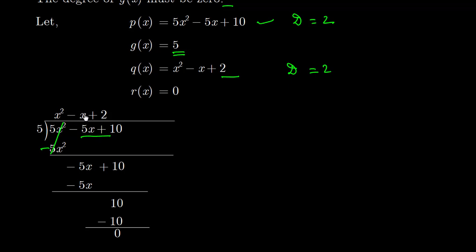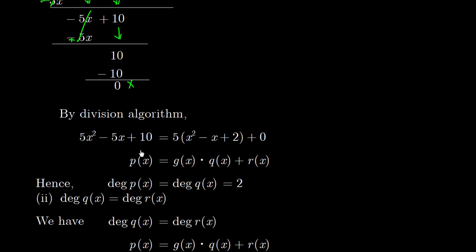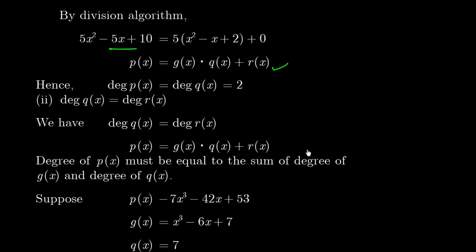To get -5x, we multiply -x by 5, giving -5x, which also cancels after sign change. Then 2 × 5 = 10, so remainder is 0. Both degrees are equal. The key point is: if degree of P(x) must equal degree of Q(x), then the degree of the divisor G(x) should be 0. By the division algorithm, P(x) = G(x)·Q(x) + R(x). Hence, degree of P(x) = degree of Q(x) = 2.